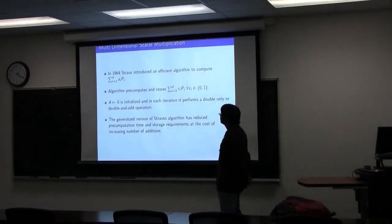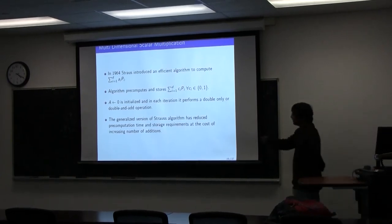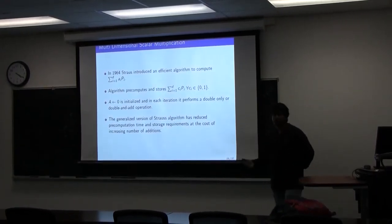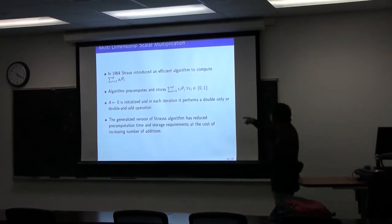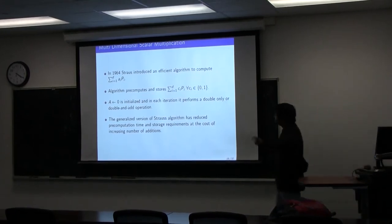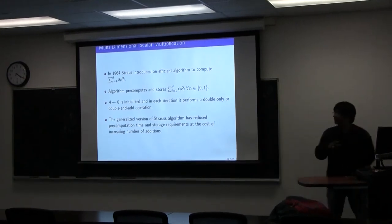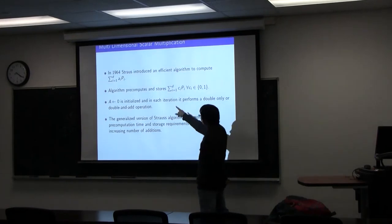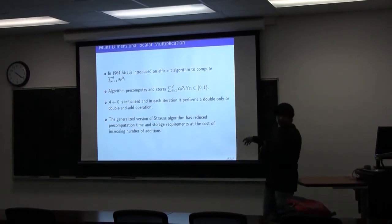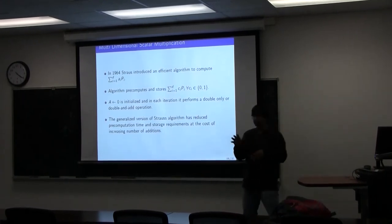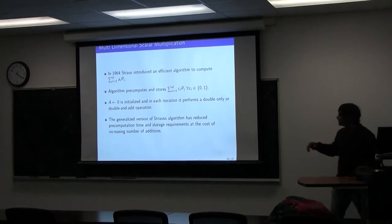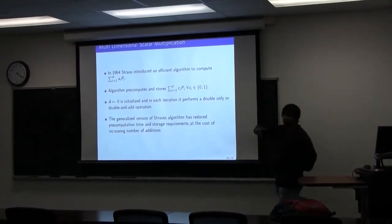Now let's discuss multi-scalar multiplication. Given a finite number of scalars a_1 to a_N and a finite number of points P_1 to P_N from the same elliptic curve, how efficiently can we calculate the sum Σ a_i · P_i — the linear combination? Straus in 1964 introduced an algorithm that pre-computes all combinations of the points: P1+P2, P1+P2+P3, P1+P2+P4, and so on. Whenever a combination is needed, it is called from the table and added.